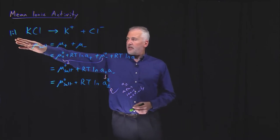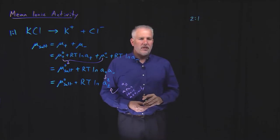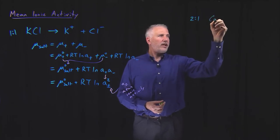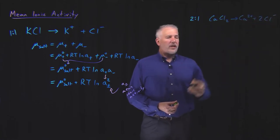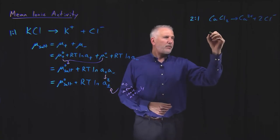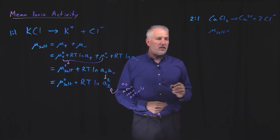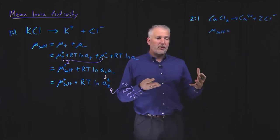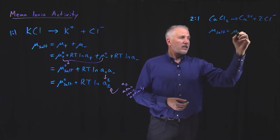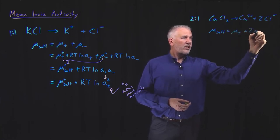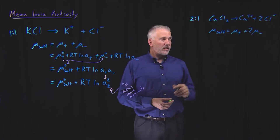This is how things work for a one-to-one salt like KCl. It works a little differently for a salt with a different stoichiometric ratio. For example, calcium chloride dissolves into one calcium ion and two chloride ions. In that case, the chemical potential of the salt is the chemical potential of the cations plus twice the chemical potential of the chloride ions, because there are twice as many anions as cations — they appear in solution at twice the concentration.